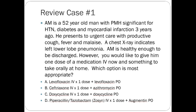Choice B is ceftriaxone IV times one dose plus azithromycin PO. This might sound fine initially, however the problem is you aren't covering strep pneumo on the outpatient side. If you give somebody IV ceftriaxone and start them on azithromycin, you still need to continue some form of third or second generation cephalosporin. Remember that macrolides only have pretty poor coverage against strep pneumo, which is why we can't use them as single therapy in community-acquired pneumonia.